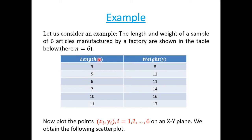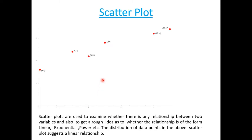In the table, x denotes the length and y denotes the weight of a sample of 6 articles. Let us make a scatter plot of the data points. We may use this scatter plot to see whether there is any functional relationship between the variables x and y, and also to understand the nature of the relation — whether it is linear, quadratic, exponential, or power, etc. In this case, we can see that the relationship between x and y is linear in nature.